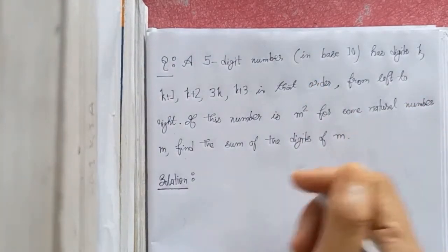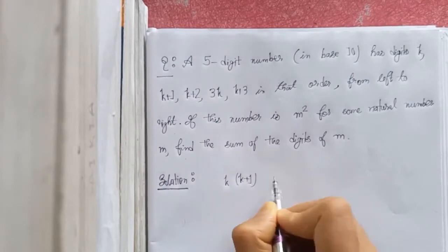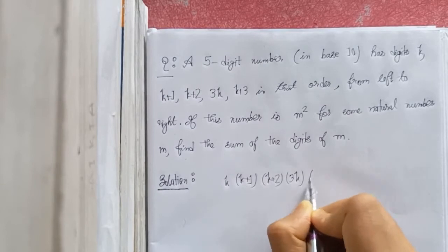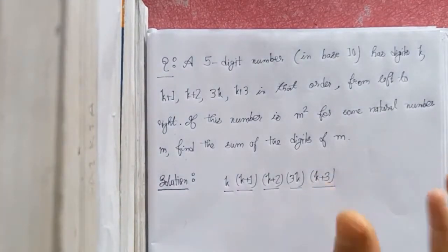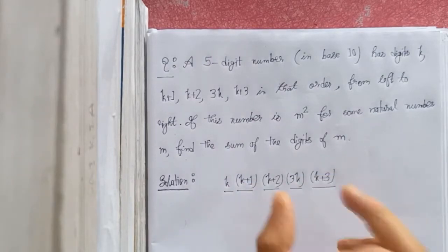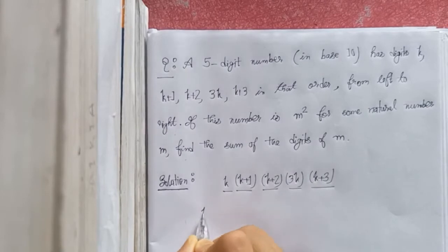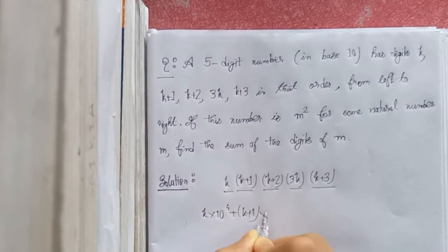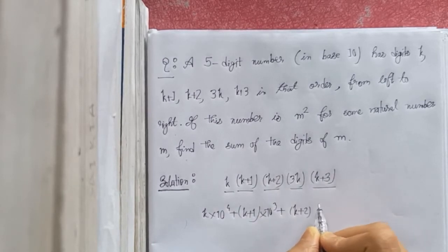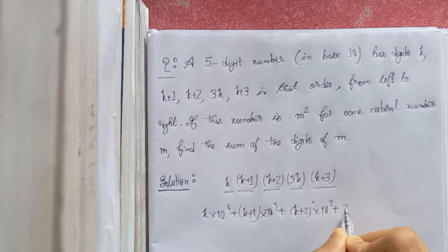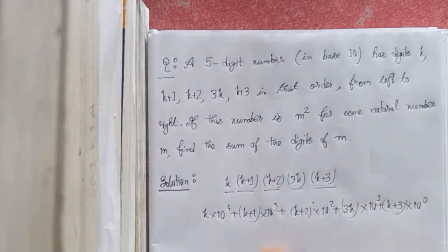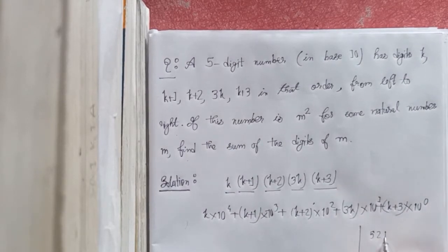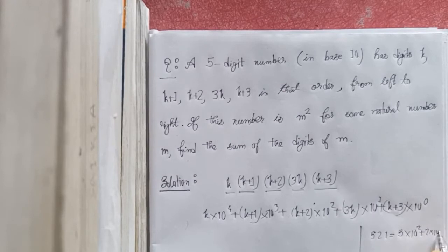We first write the number as k, k+1, k+2, 3k, k+3. Now we express this digit-wise: k into 10 to the power 4, plus k+1 into 10 cubed, plus k+2 into 10 squared, plus 3k into 10, plus k+3 into 10 to the power 0. Just like 521 is expressed as 5 into 10 squared plus 2 into 10 plus 1, giving 500 plus 20 plus 1 equal to 521.